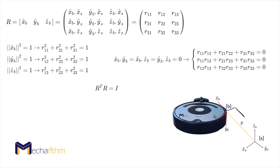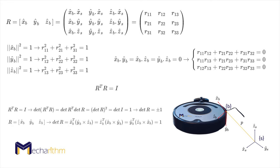As we discussed in the preliminaries lesson, all frames in robotics are taken to be right-handed, meaning that the cross product of the X and Y axes is the Z axis and so on, and they are not left-handed. But the six constraints that we just discussed don't account for this, since if we take the determinant of R transpose R, we will get both plus one and minus one. If we take the right-handed coordinate system, then the determinant of R will always be one.